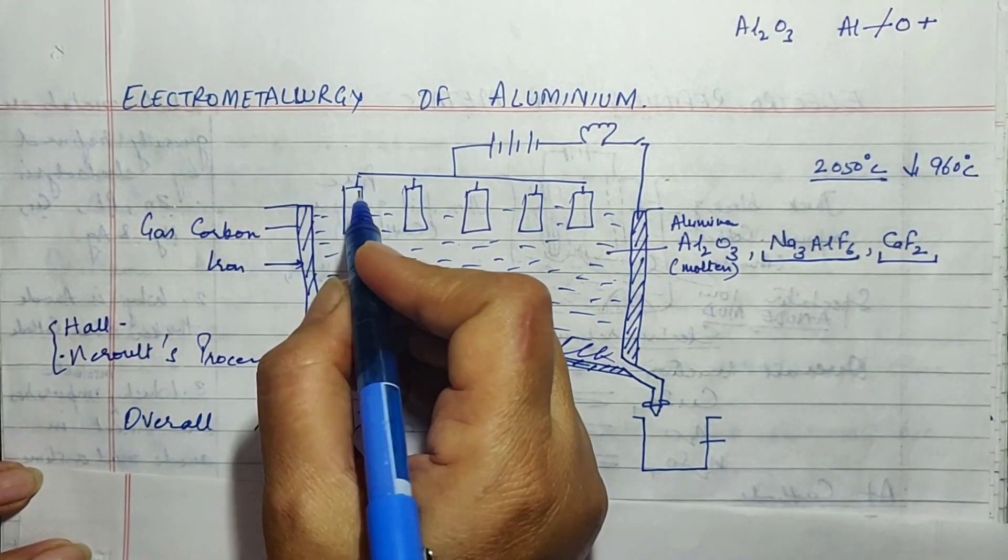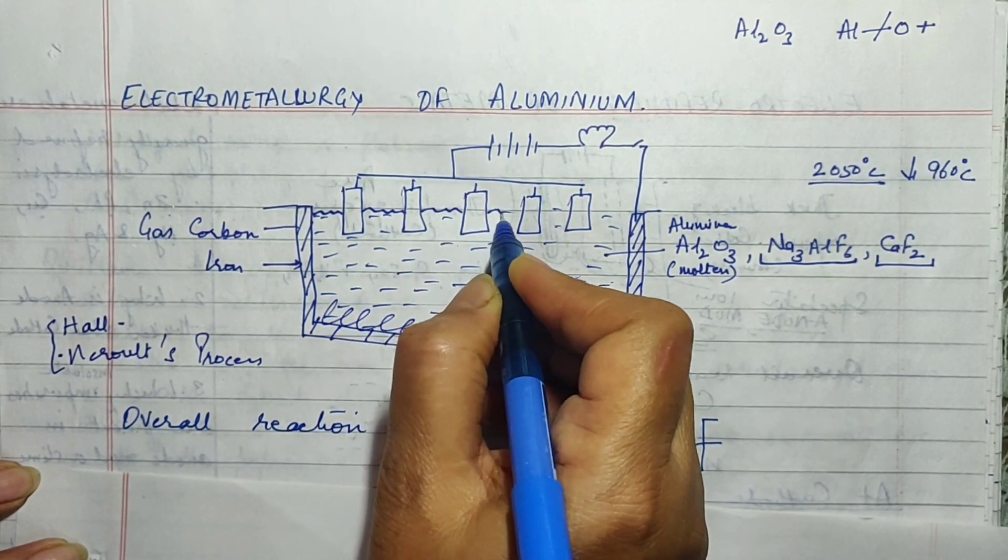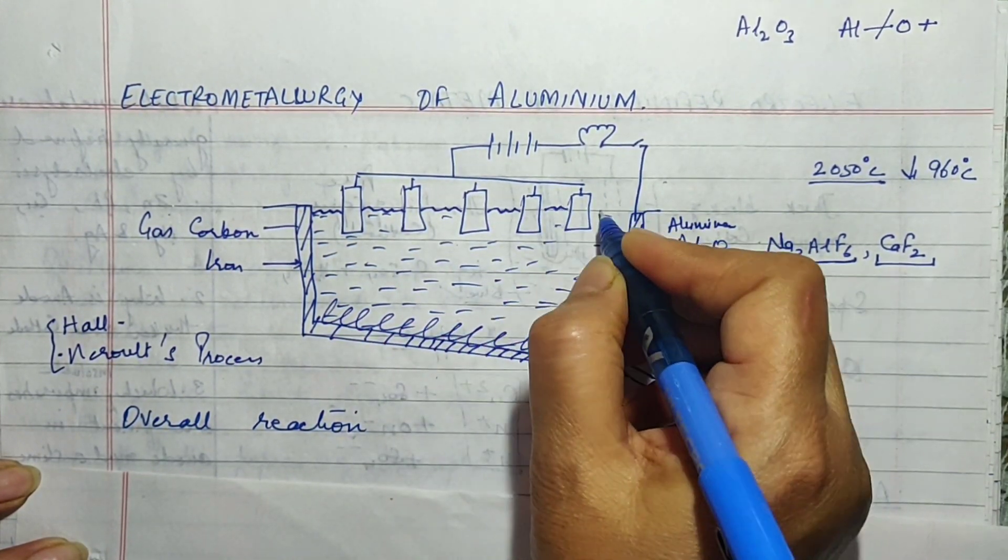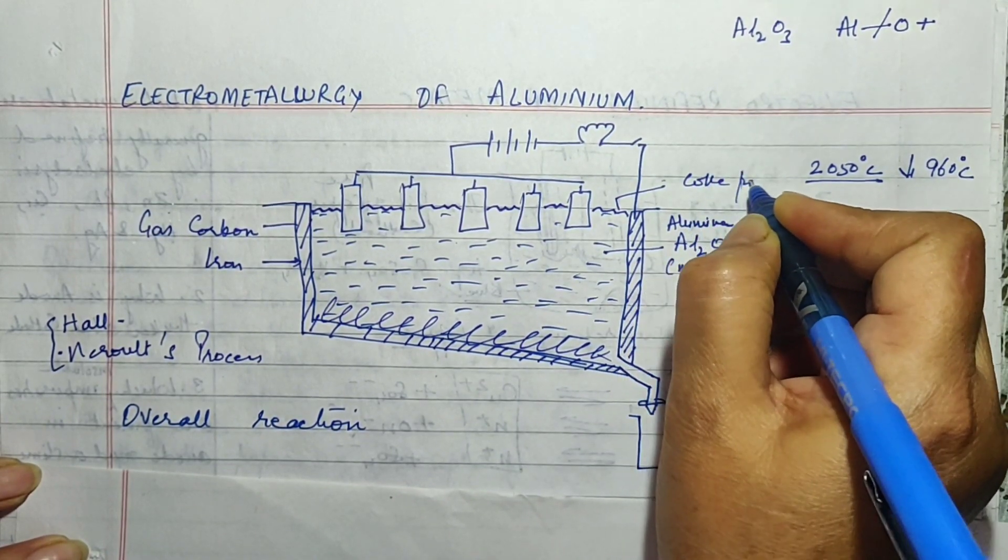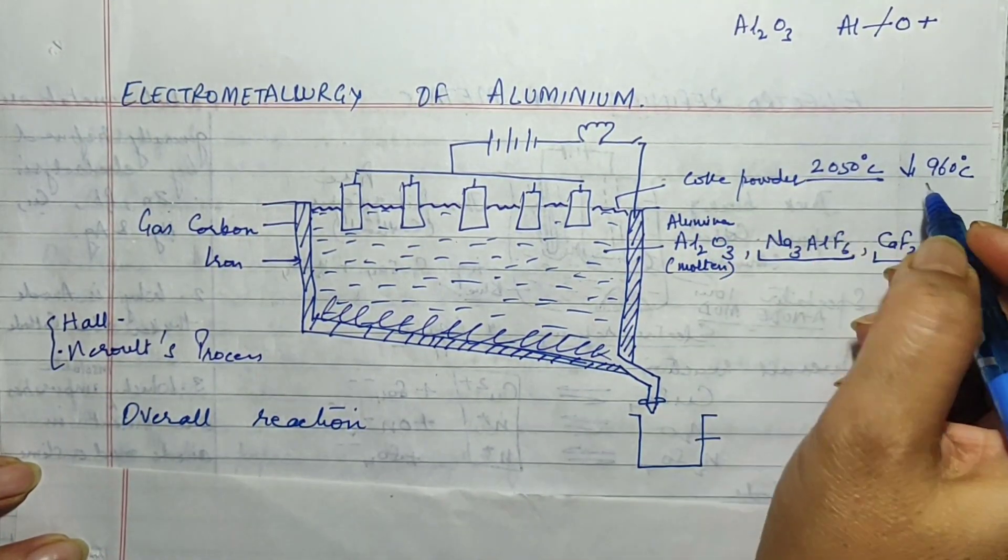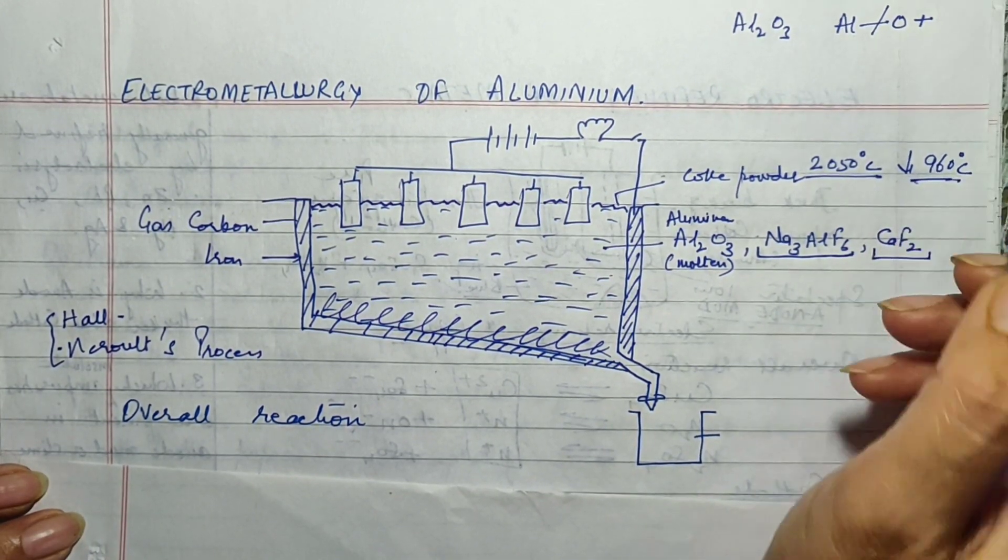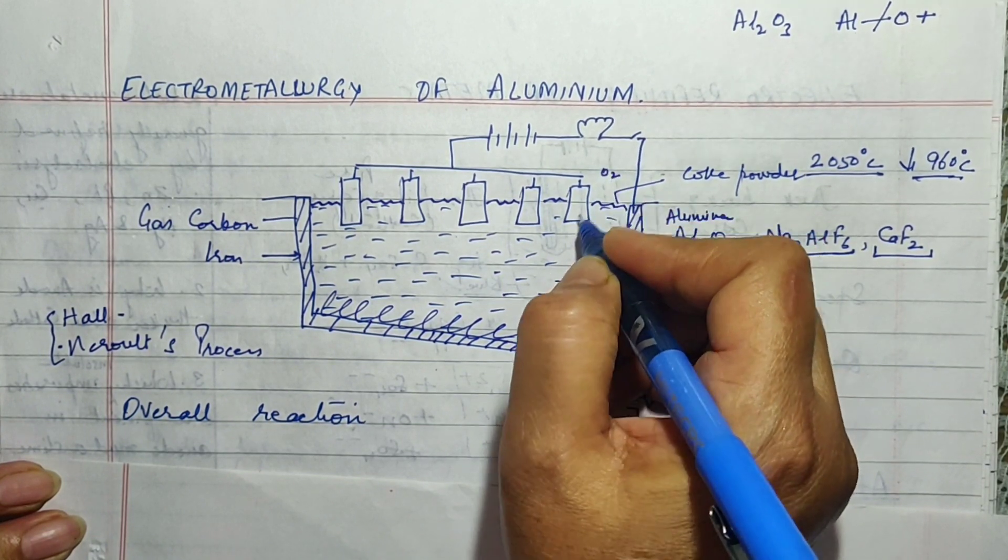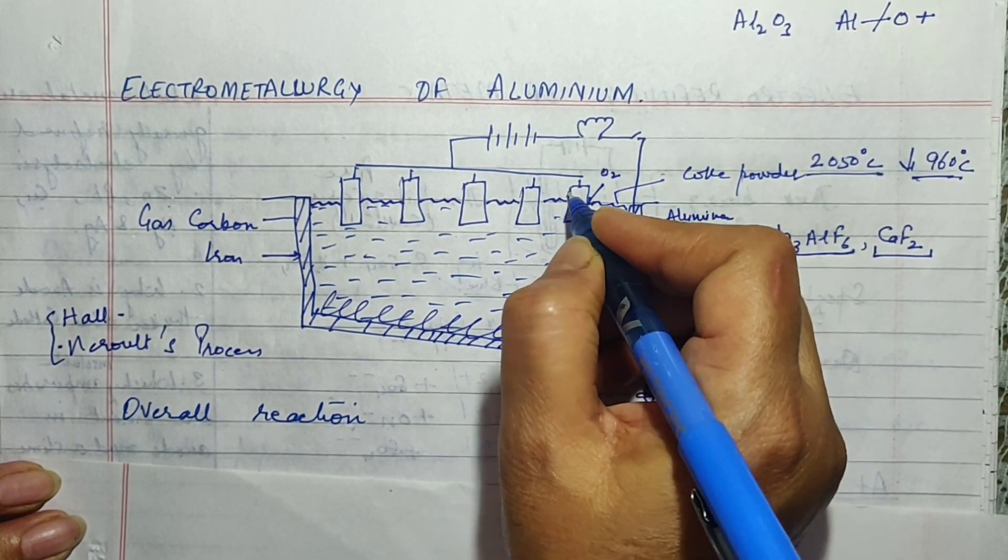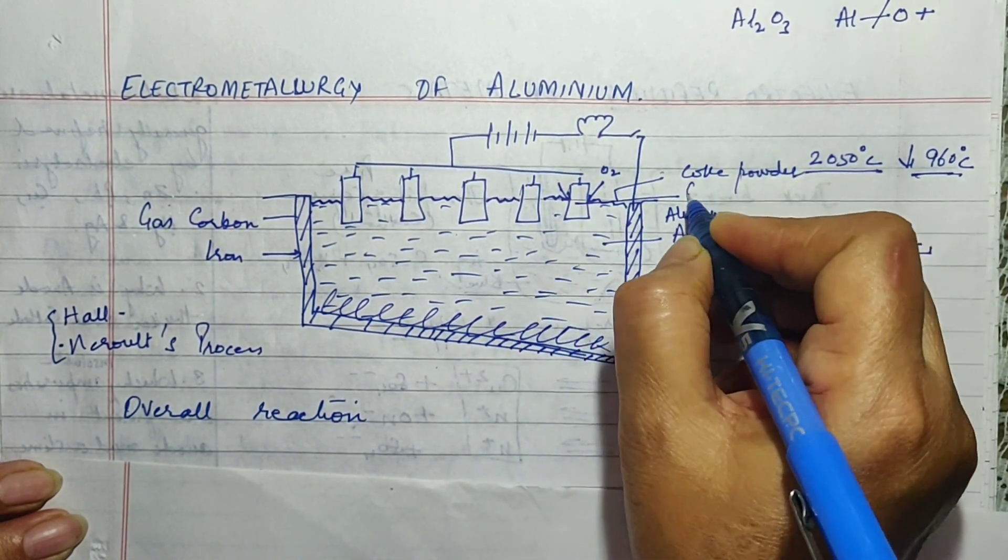Now on the top of the electrolyte some coke powder is also sprinkled. Coke powder is sprinkled. What is the purpose of this coke powder? Actually when we pass the electric current through it the temperature of the electrolyte is very high.